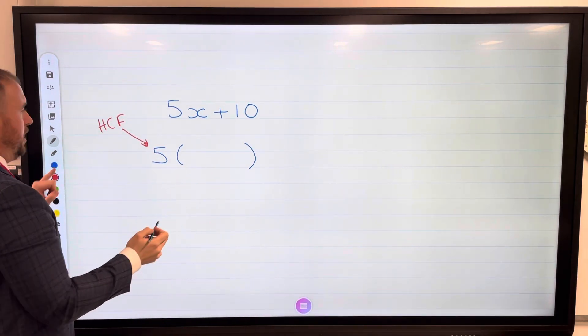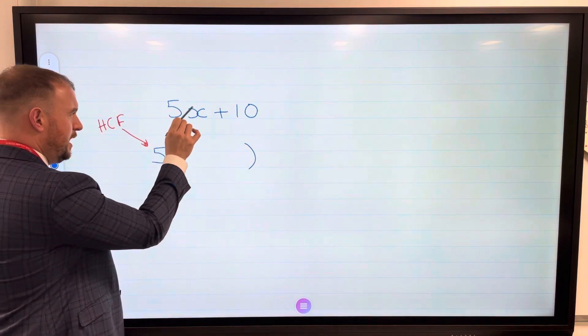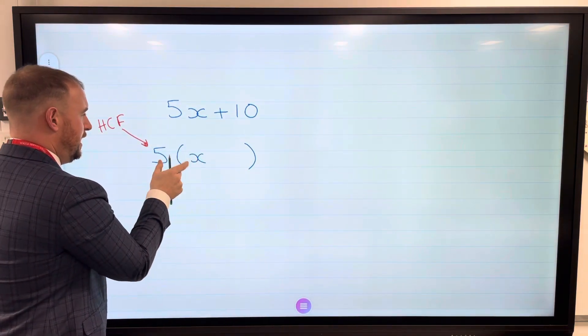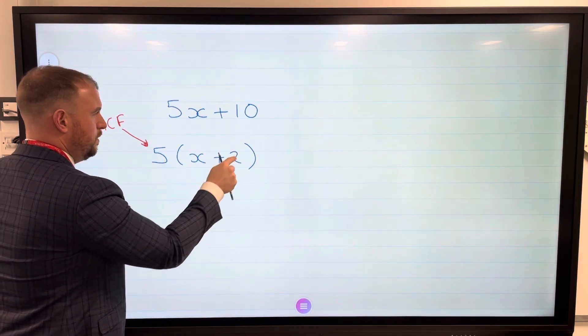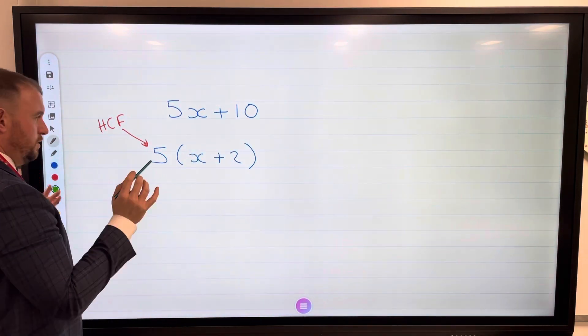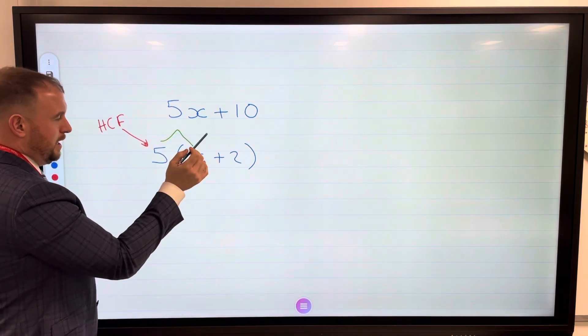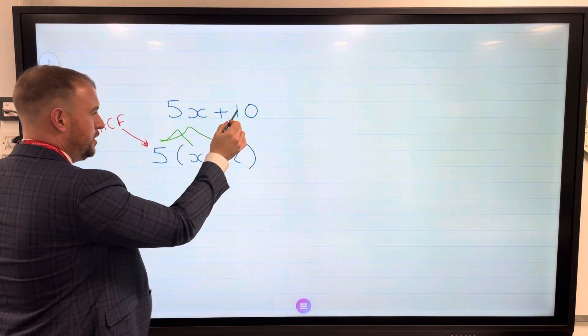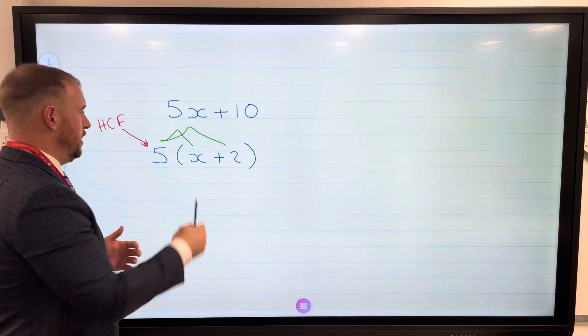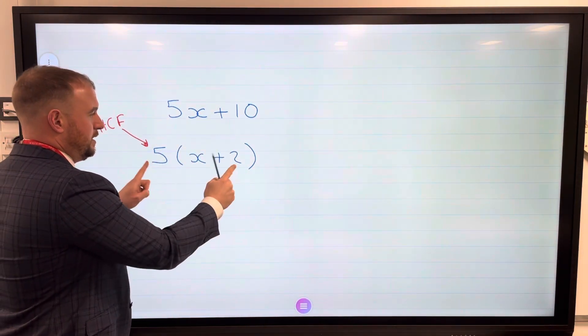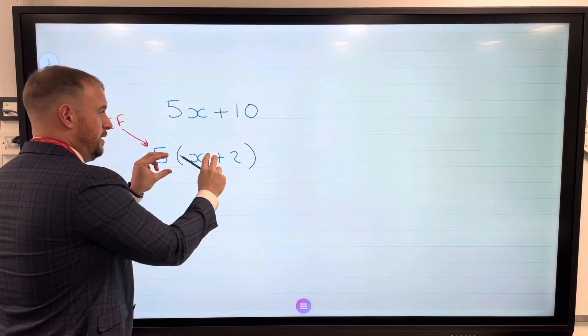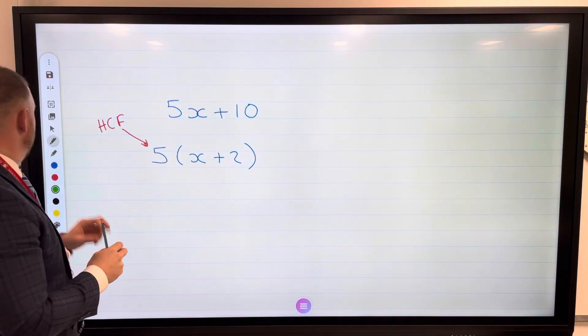Now I've got to fill in the gaps in here. Well, 5 times x is 5x, and then 5 times 2 is... 5x, yes it is. And then 5 times 2, is it 10? Yes it is. So this part here is our answer because we have to factorize this by putting it into a bracket.